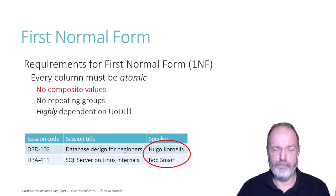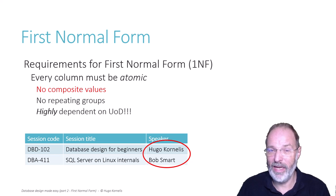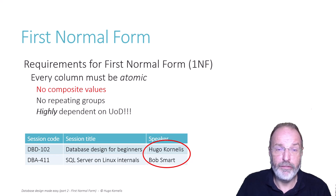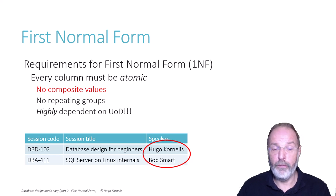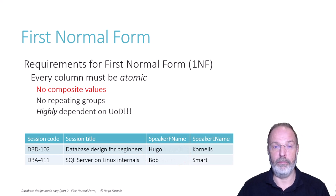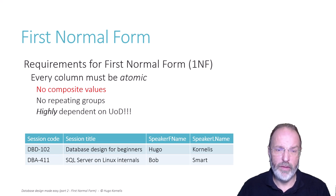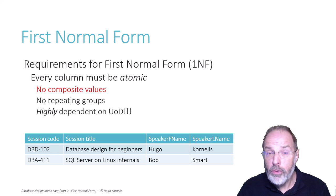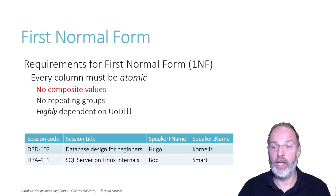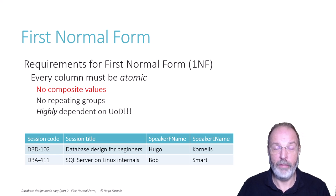Many people will look at this and say these are composite values, because Hugo Cornelis is a first name and a last name, and Bob Smart is a first name and a last name. So for first normal form, we have to separate this into a speaker first name and a speaker last name. But do we?